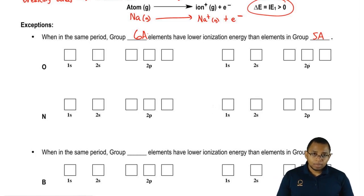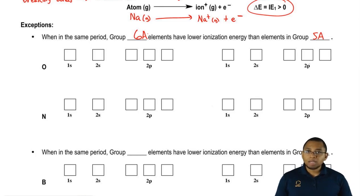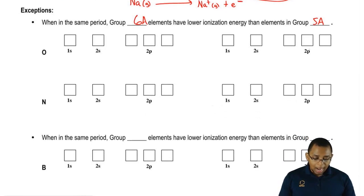Let's take an example. Here we have oxygen and nitrogen. Oxygen is in group 6A, nitrogen is in group 5A. They're both in period 2, so they're in the same period, and this rule applies to them.